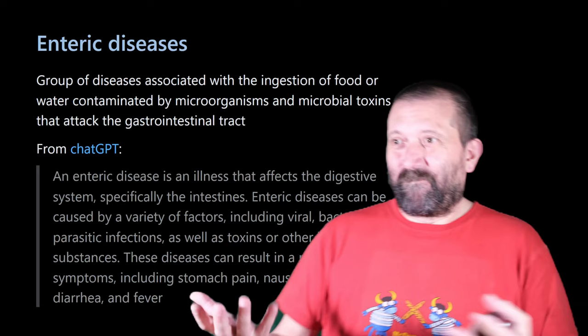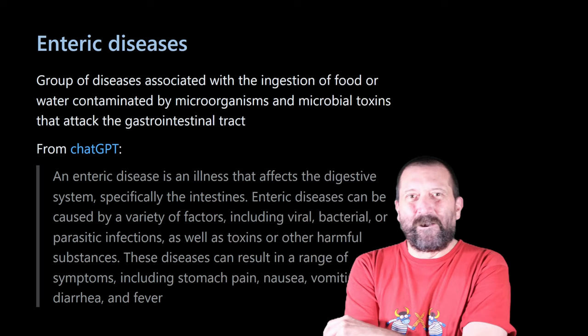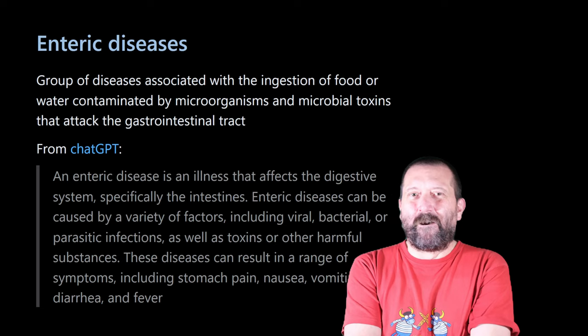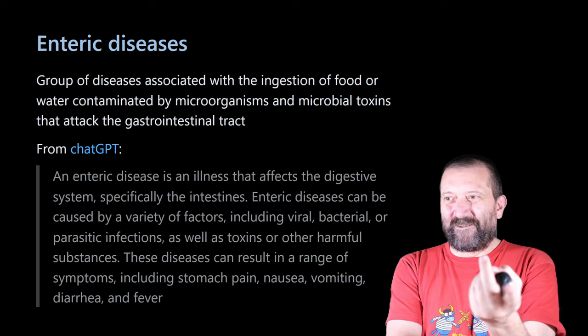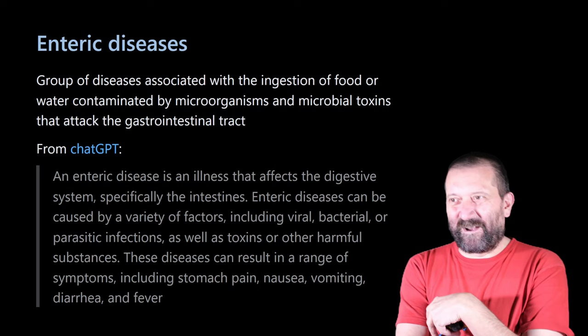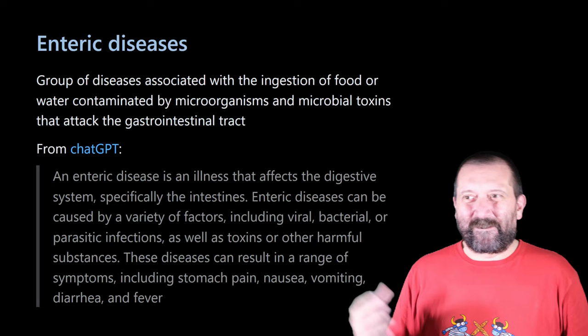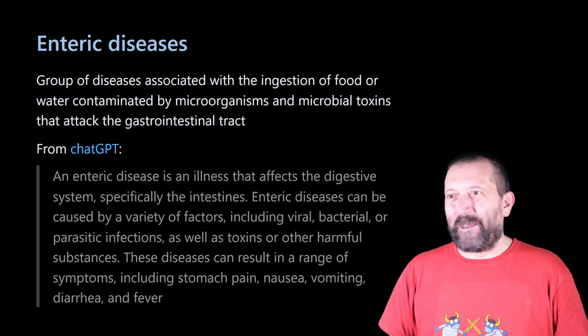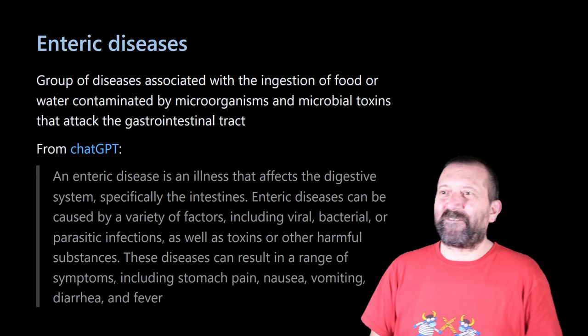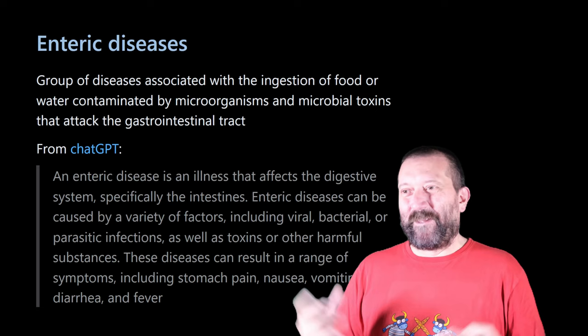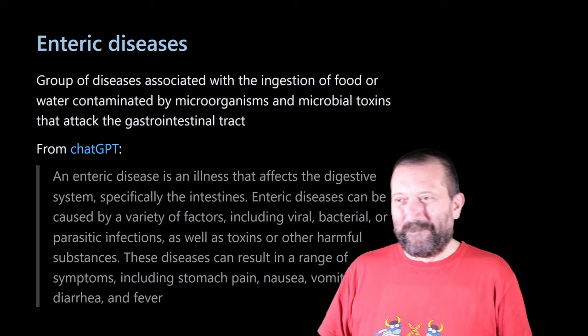An enteric disease is a group of diseases associated with ingesting food or water that is contaminated, attacking the gastrointestinal tract. As a fun little exercise, I asked ChatGPT to define an enteric disease, and the definition I got was: 'an illness that affects the digestive system, specifically the intestines, and can be caused by a variety of factors including viral, bacterial, or parasitic infections.' Quite funny — I did not tell the AI that I wanted this, and this is exactly what I got.